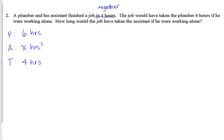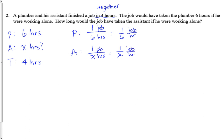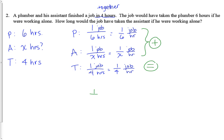I need to turn these into rates — how much of the job do we complete every hour? The plumber completes one job every six hours, which means he completes one sixth of a job per hour. The assistant completes one job every x hours, so he completes one over x of a job per hour. Together we complete one job in four hours, so we complete one fourth of a job every hour. Adding our individual rates: one over six plus one over x equals one over four.